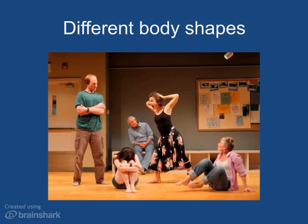In this tableau, you see a variety of levels along with a variety of body shapes. Let's try to describe the shapes we see. The actor on the left has a vertical line with a strong, open triangular base and a closed torso. The actor standing to his right is on a diagonal line with a very open base and torso. The seated actor in the back has a curved shape. The actor on the floor left is very closed, while the actor to her right is very open.